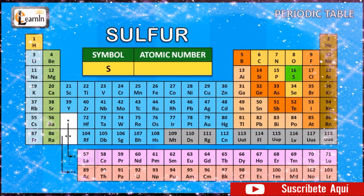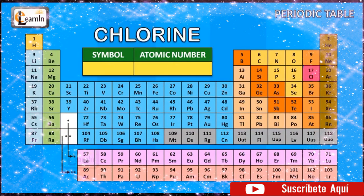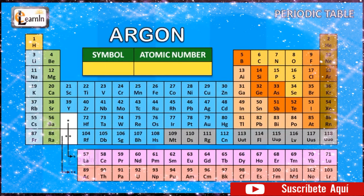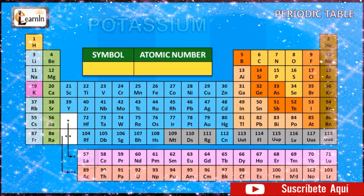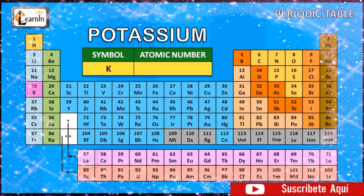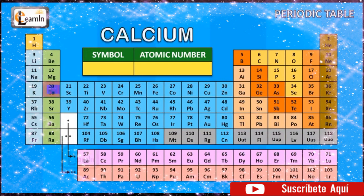The element sulfur is represented as S and has an atomic number of 16. The element chlorine is represented as Cl and has an atomic number of 17. The element argon is represented as Ar and has an atomic number of 18. The element potassium is represented as K and has an atomic number of 19. The element calcium is represented as Ca and has an atomic number of 20.